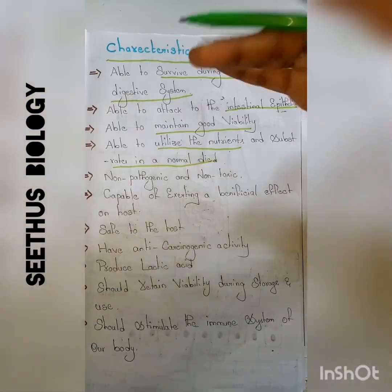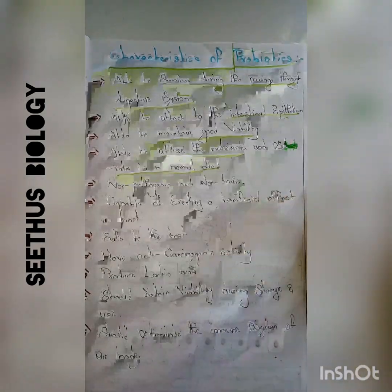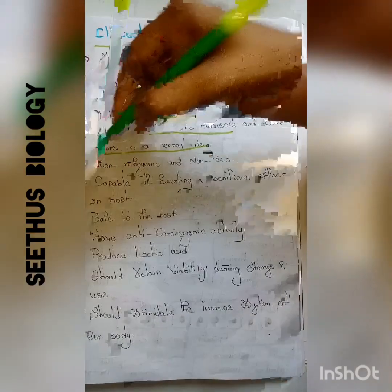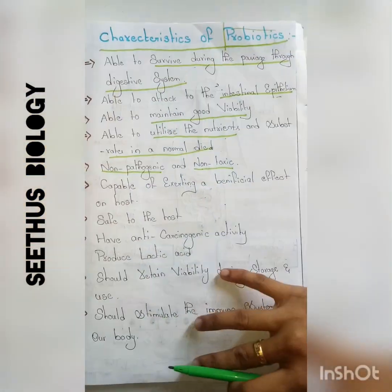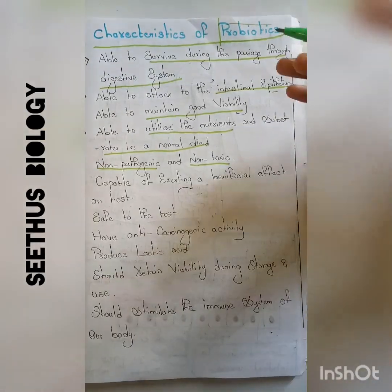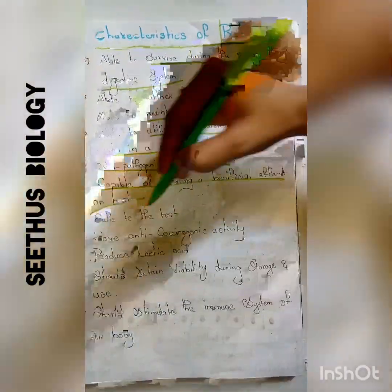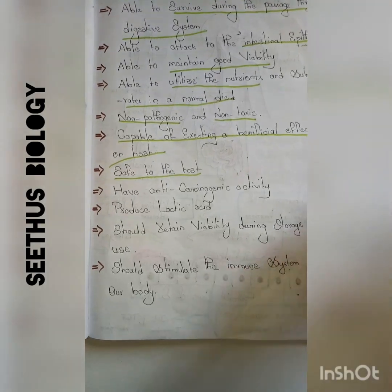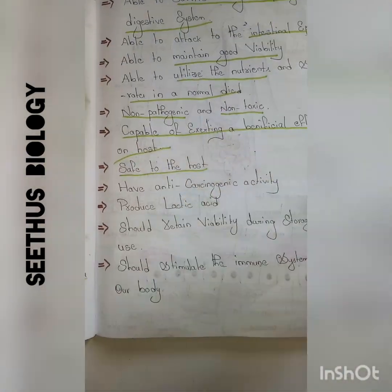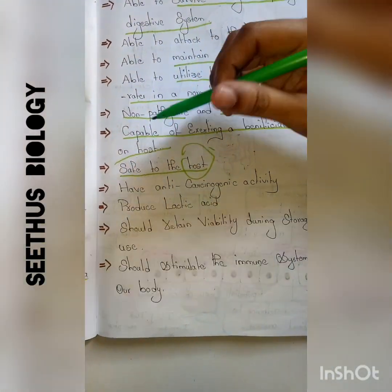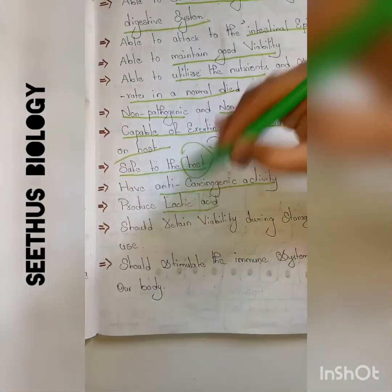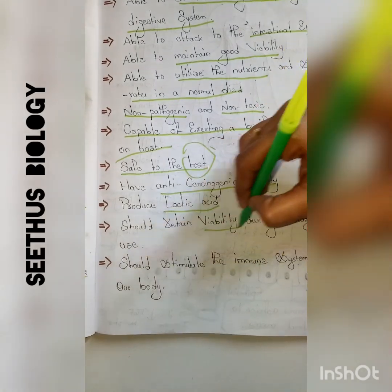Probiotics must be able to utilize nutrients and substrates from the normal diet — from daily food, both nutrients and substrates are utilized by probiotics. Each probiotic must have a non-pathogenic and non-toxic effect, meaning it must not cause any harm to the host. It must also exert a beneficial effect on the host, be safe to the host, and have anti-carcinogenic activity.